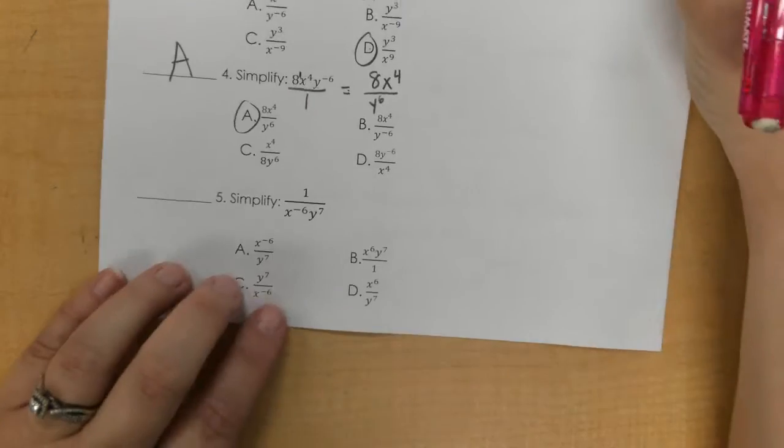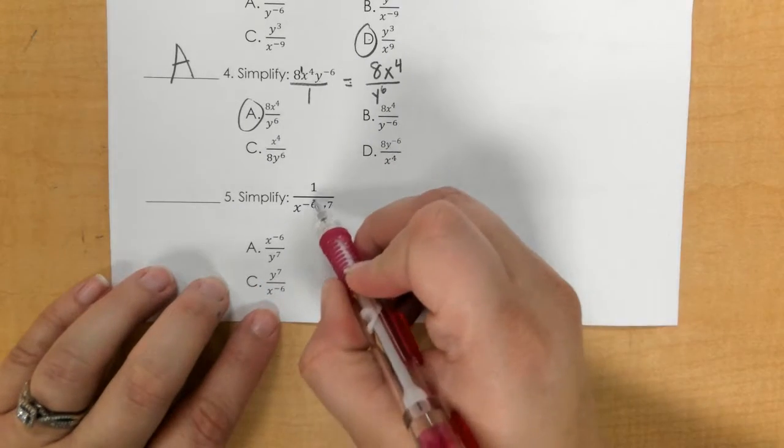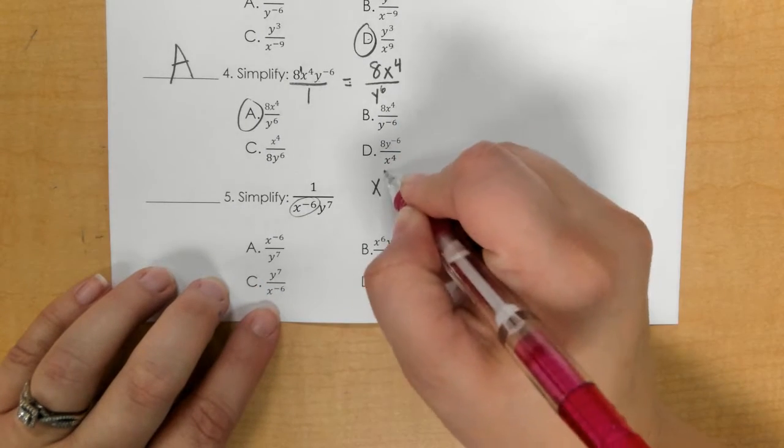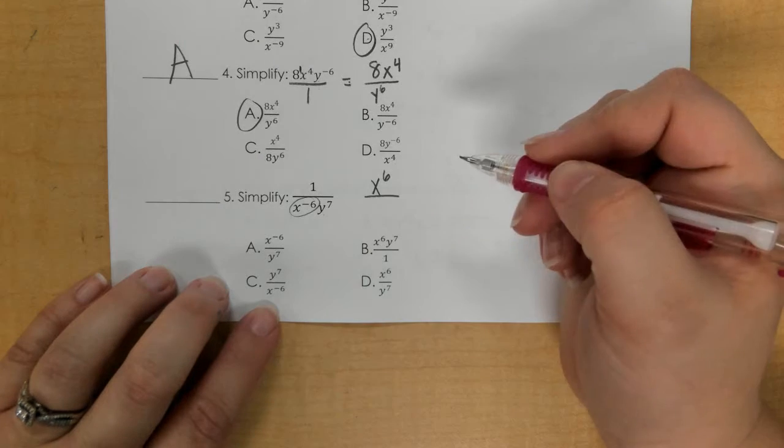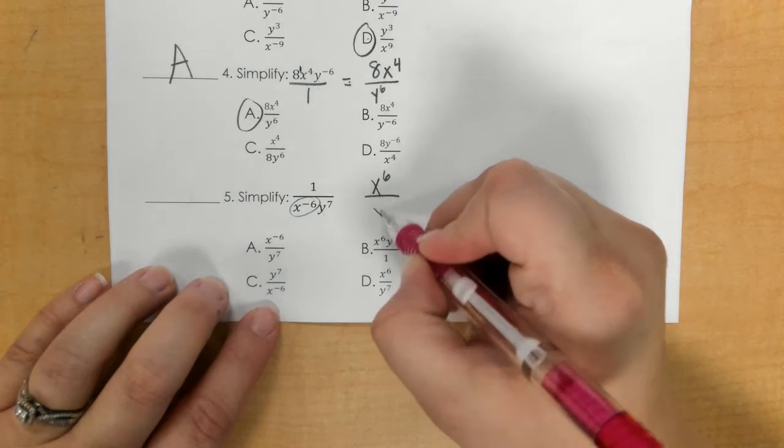In number 5, we're just moving the negative exponent up, so that would be a positive 6 at the top. And y⁷ would be at the bottom, so D.